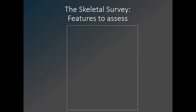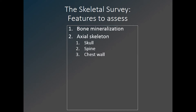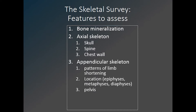We will now go through an overview of how to approach looking at a skeletal dysplasia. We will simplify this approach to discuss five features to assess on any given skeletal survey: bone mineralization; the appearance of the axial skeleton, including any skull, spine, or chest wall abnormalities; the appearance of the appendicular skeleton, including specific patterns of limb shortening and where exactly an abnormality is located within a long bone; the presence of normal growth or growth delay; and finally, any specific or unique features about the skeleton or soft tissues.